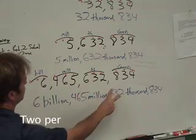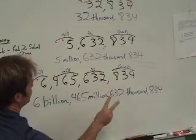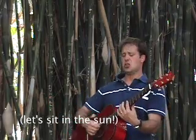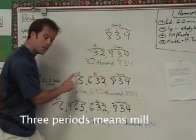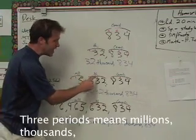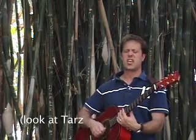Two periods means thousands and ones. Three periods means millions, thousands, and ones.